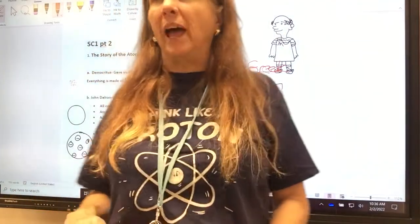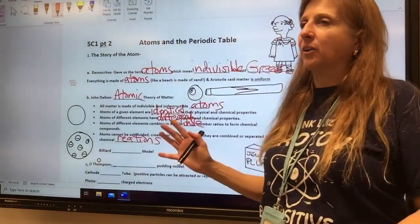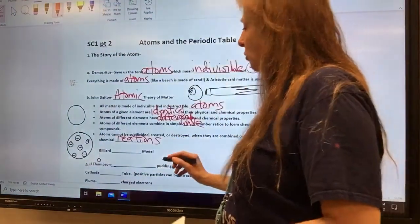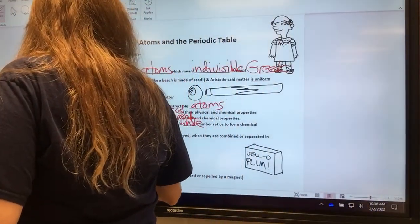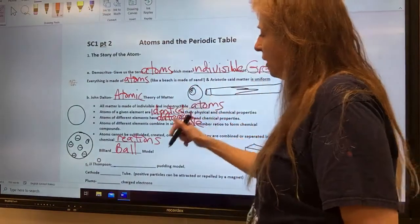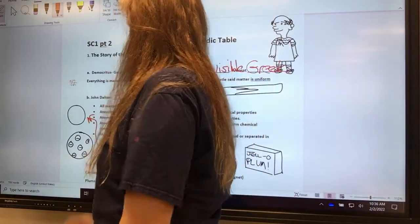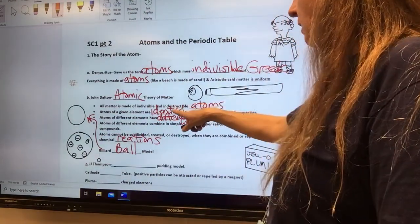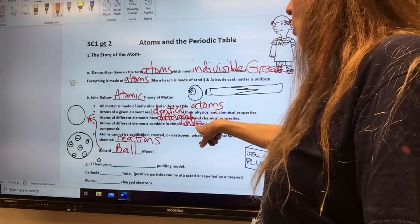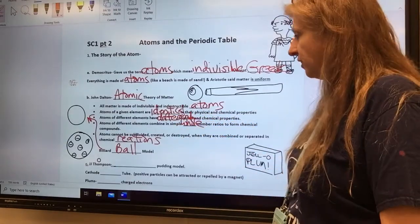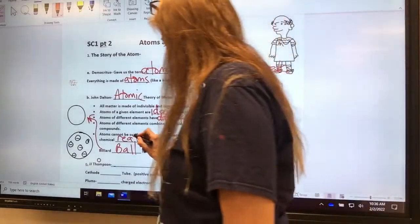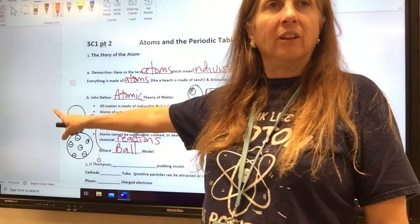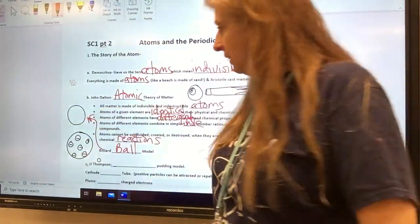His model was called the billiard ball model. A billiard ball is like a pool ball. He said that atoms are like little pool balls. So this is the billiard ball model. He said atoms are like little balls.